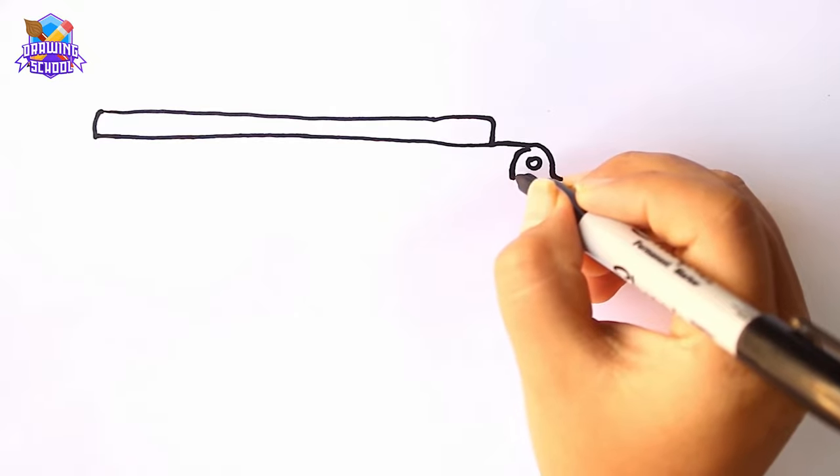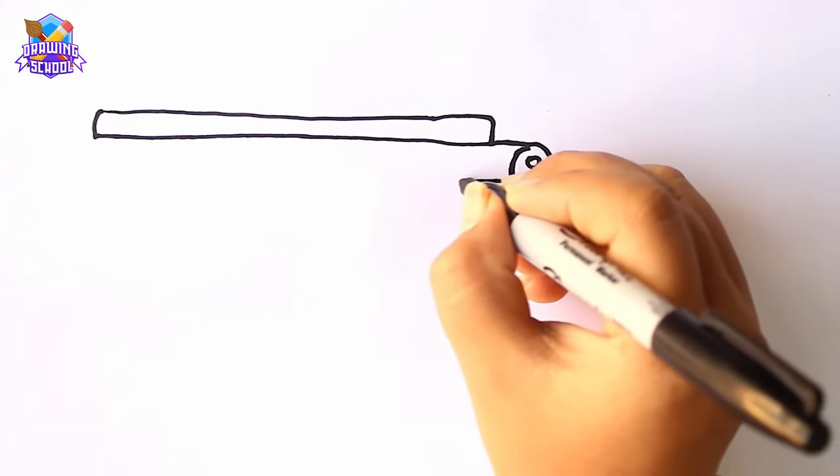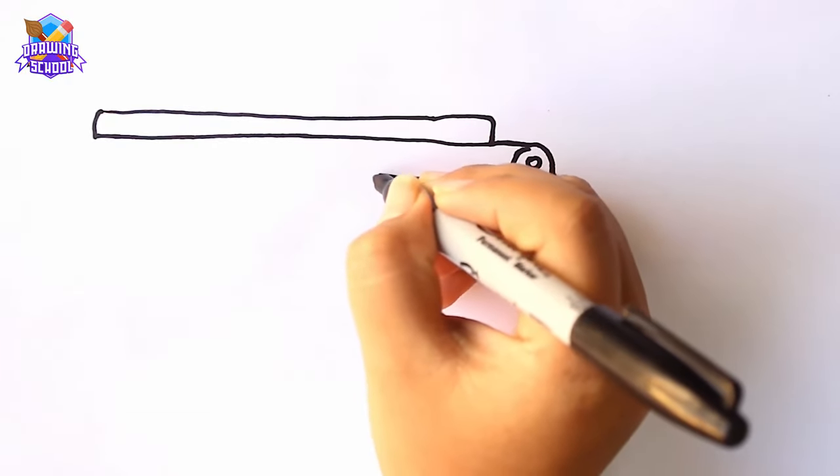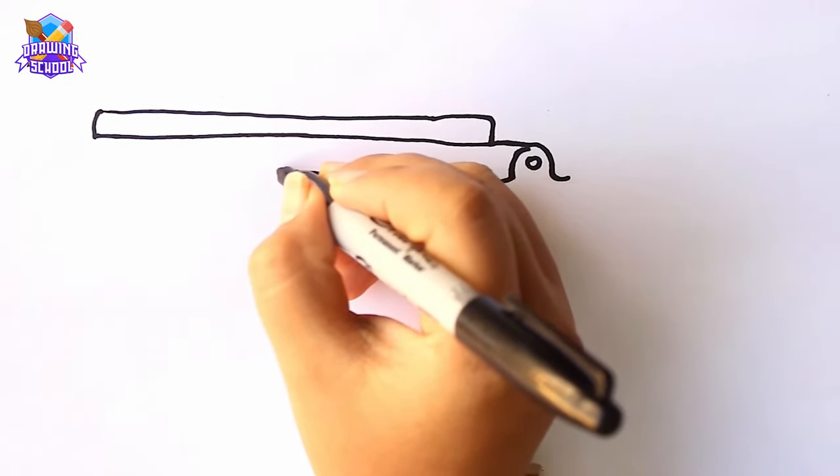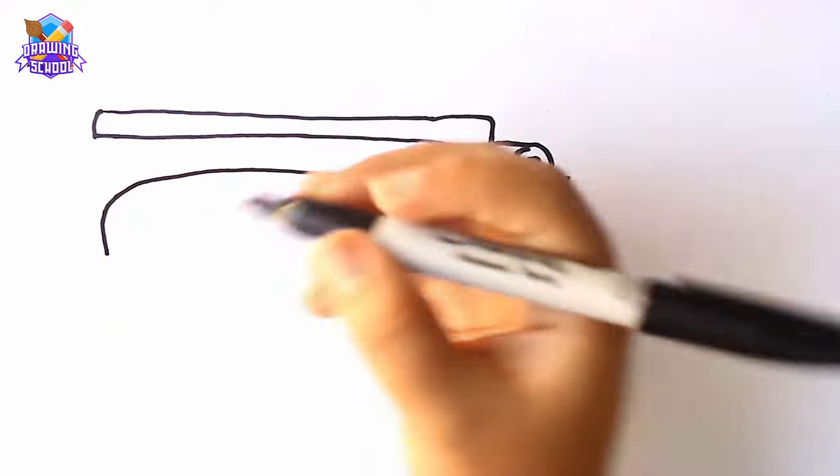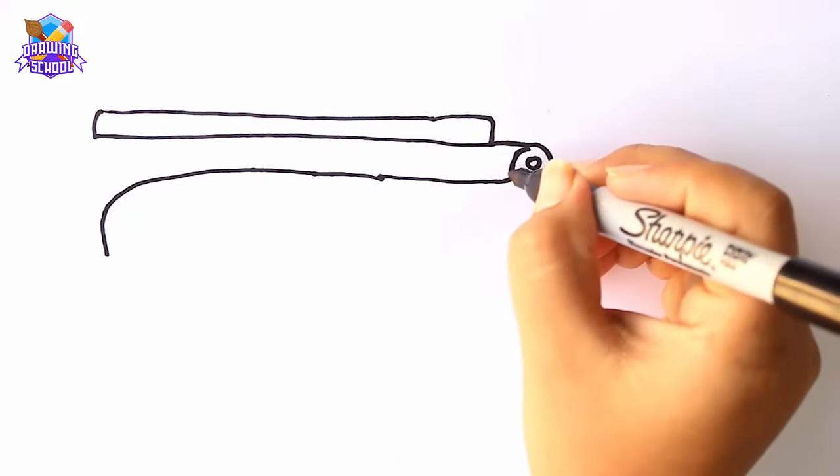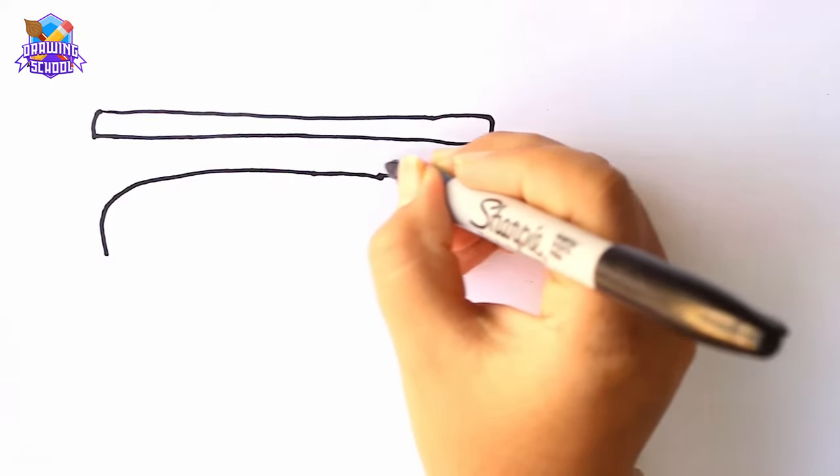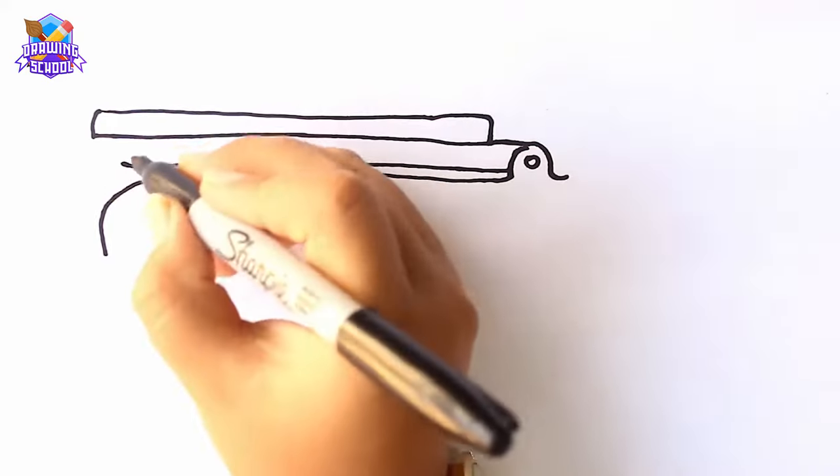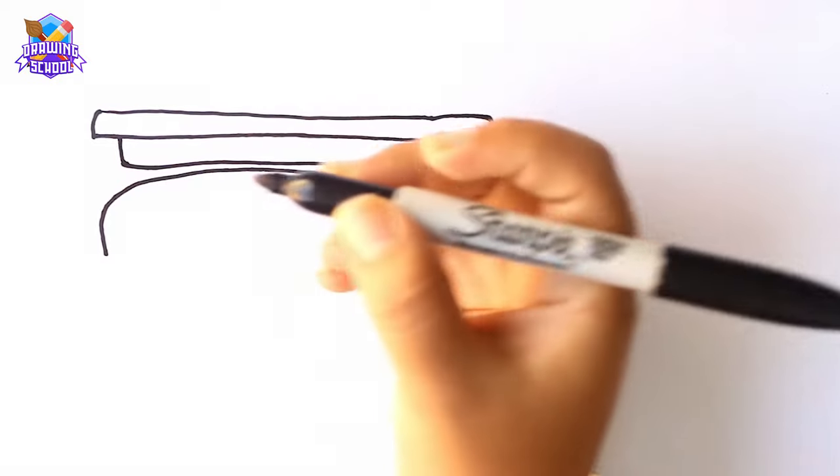Then I'm going to draw a line from right to left, like this. And curve it. Then we pull another line from here and we go up to connect it here.